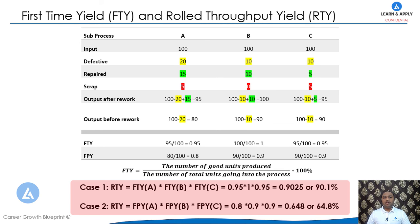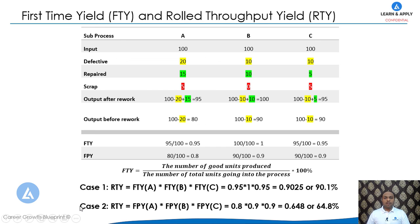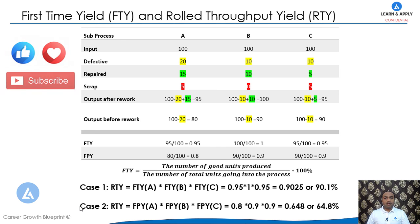For examination purposes, use Formula 1 — Case 1, which considers rework of products. Case 2, using First Pass Yield, is used in some industries for practical applications. This covers all the important concepts in six sigma: DPMO, First Time Yield, First Pass Yield, and RTY.